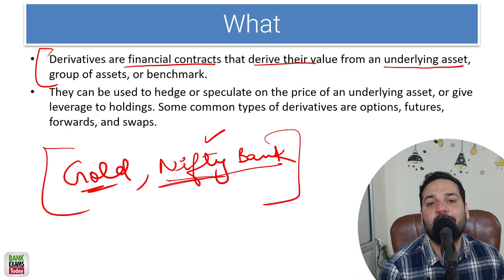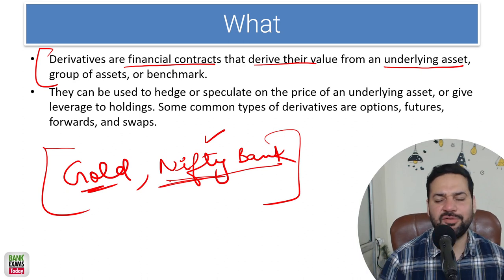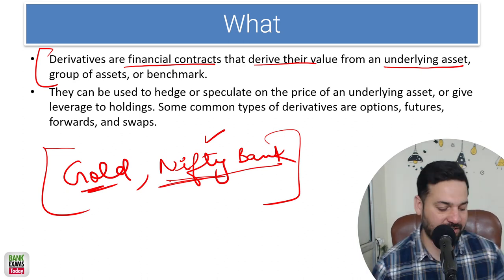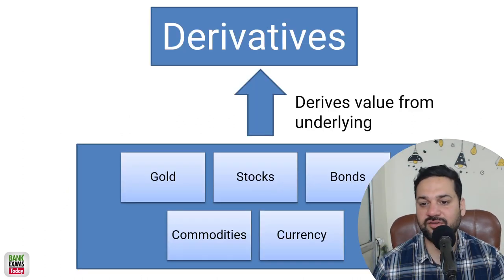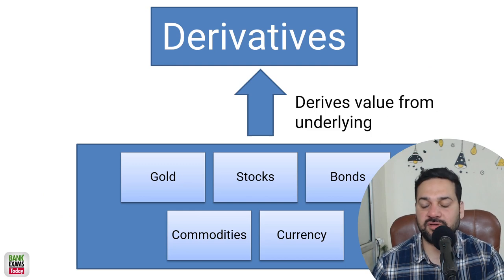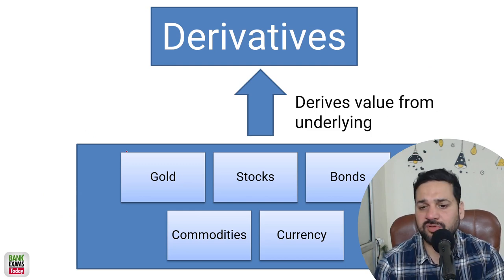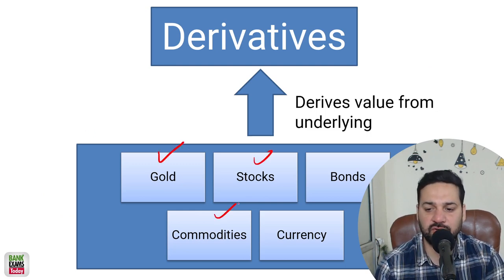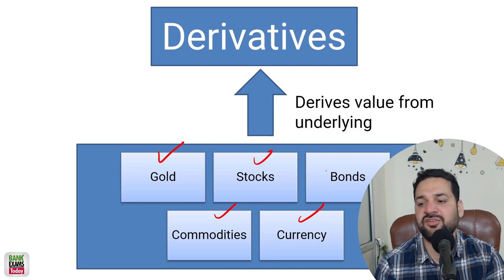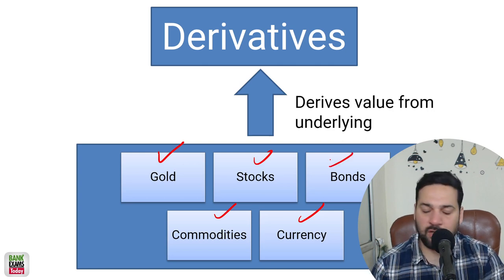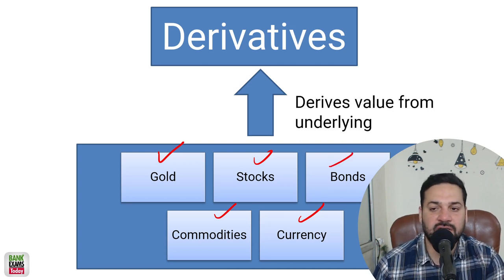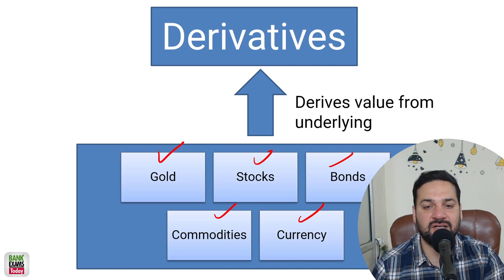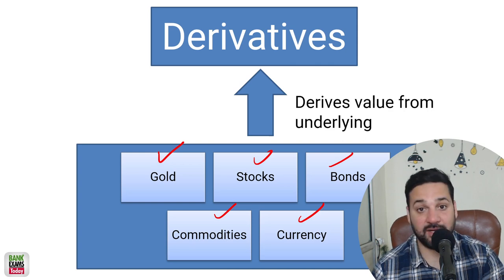So what are call options? What are put options? We are going to discuss that today. There are a lot of kinds of derivative contracts — they can be on gold, stocks, commodity, currencies, bonds. A lot of kinds of derivative contracts are available in the market.